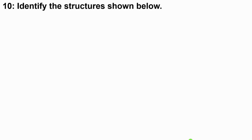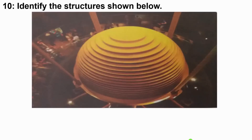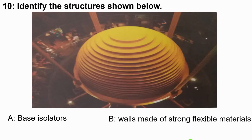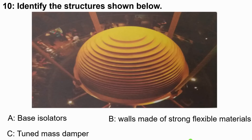Question 10: Identify the structures shown below. Option A, base isolators. Option B, walls made of strong, flexible materials. Option C, DC walls.